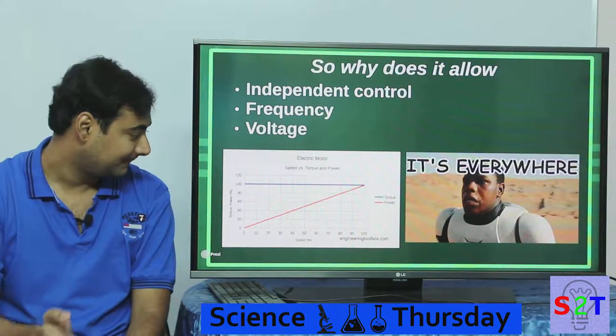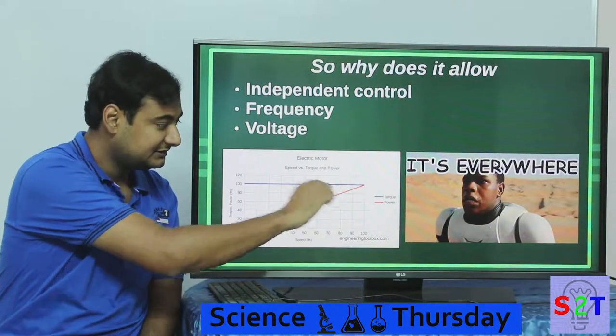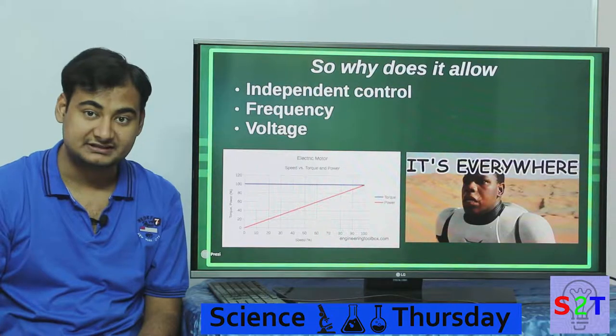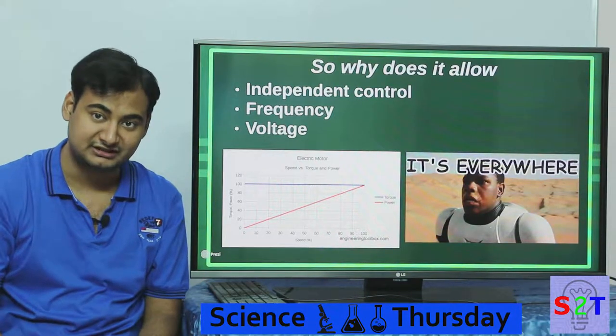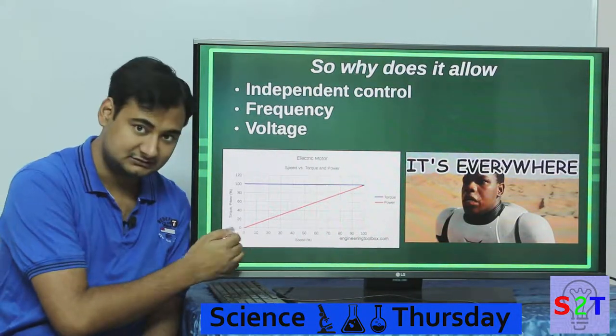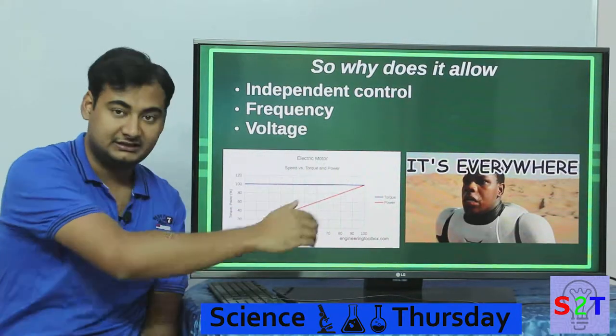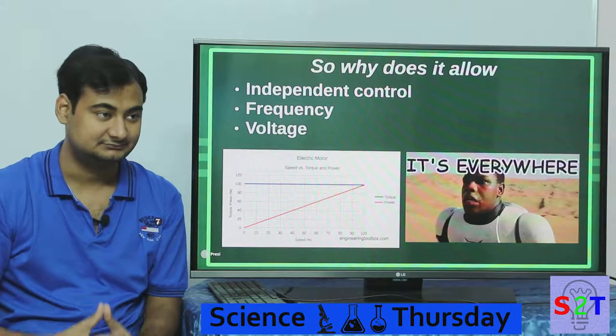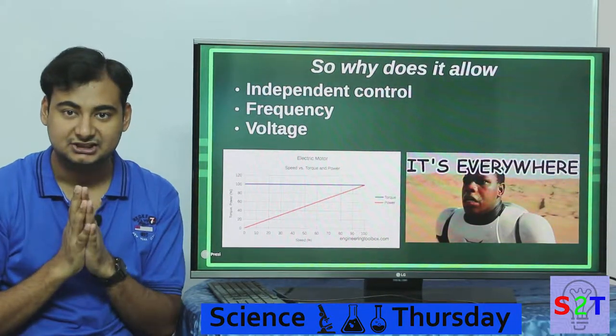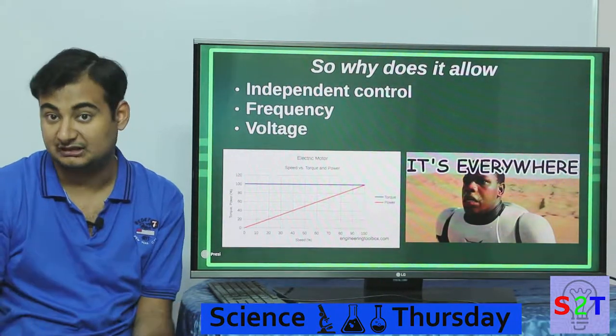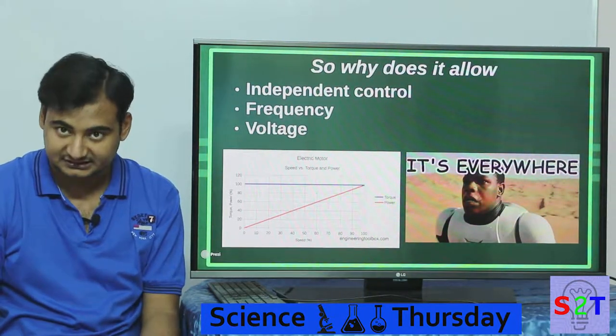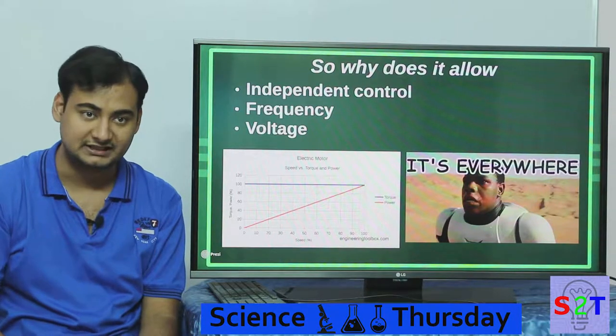As you can see in this graph, this blue line represents torque. Now this is unique about electric motors - they have 100% torque the moment you turn them on. And the power, the RPM, basically goes up as the frequency goes up. So controlling this allows us to make very precise movements, and basically anything that rotates sooner or later has an inverter to it.